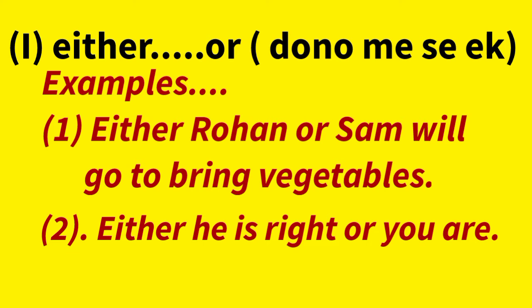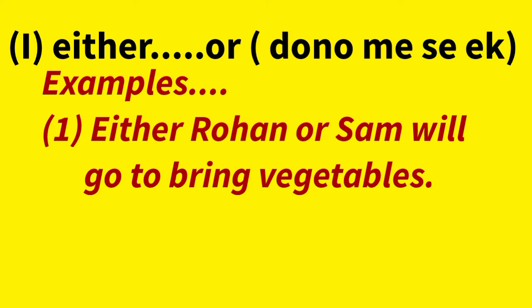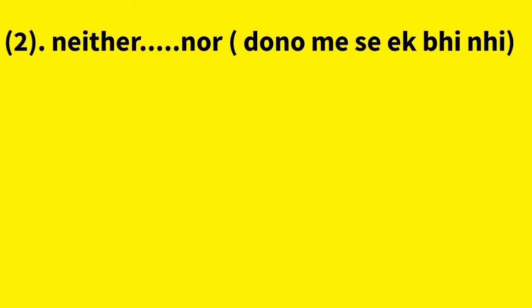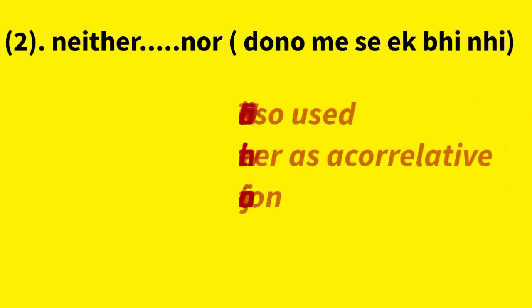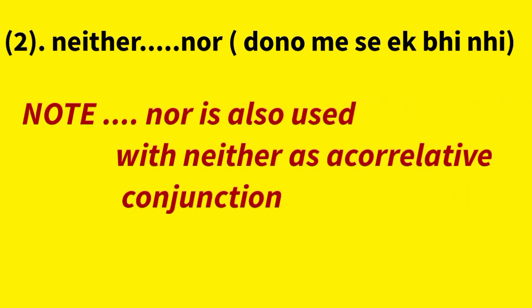The second correlative conjunction is neither...nor, which means 'not one of the two' — it is the opposite of either...or. For your information, 'nor' which we covered in coordinating conjunctions Part 1 is also used with 'neither' as a correlative conjunction.